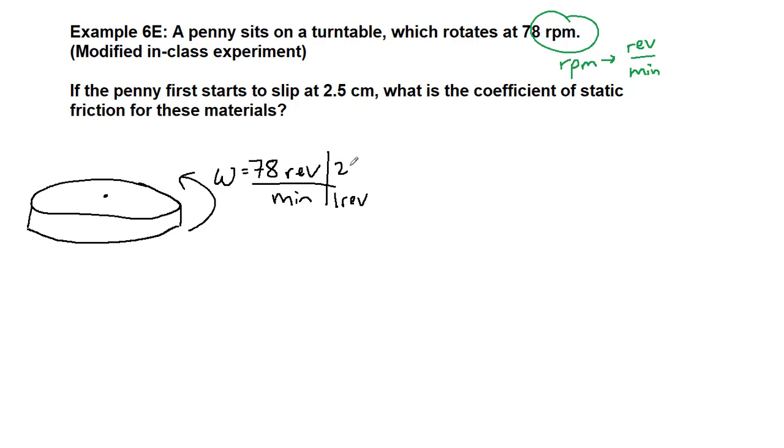So one revolution is 2π radians and one minute has 60 seconds. We will plug all that into our calculator and get 8.17 radians per second. Revolutions cancel, we have radians. Minutes on the bottom and the top cancel, we have seconds.